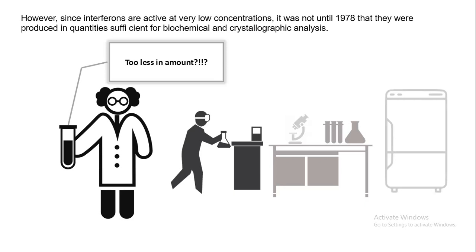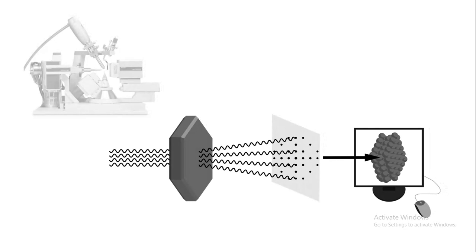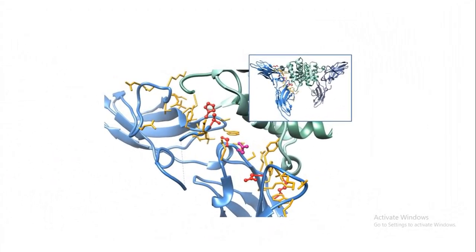Interferons were produced in very low amounts and they also work at very low concentrations. The problem was that since not much interferon could be extracted, the structural details and how they function were not totally known. In 1978, when there was an advancement in biochemical methods, the X-ray crystallographic structure of interferon gamma could be revealed. That revealed a lot of structural and functional details and shed a lot of light on how interferon functions.